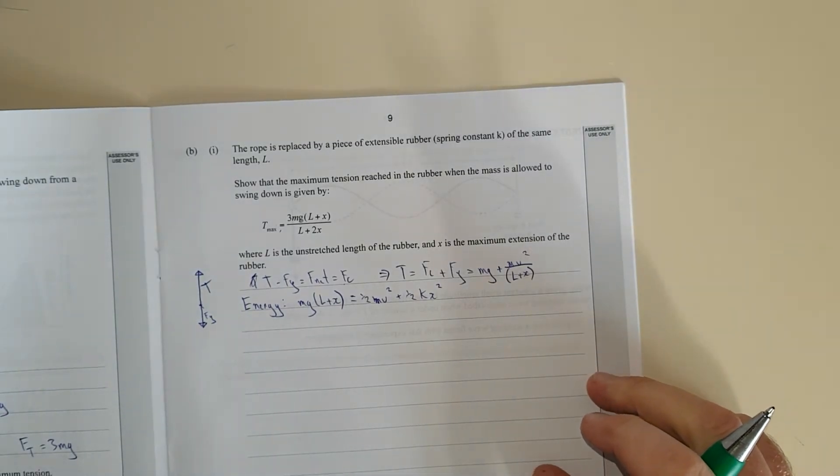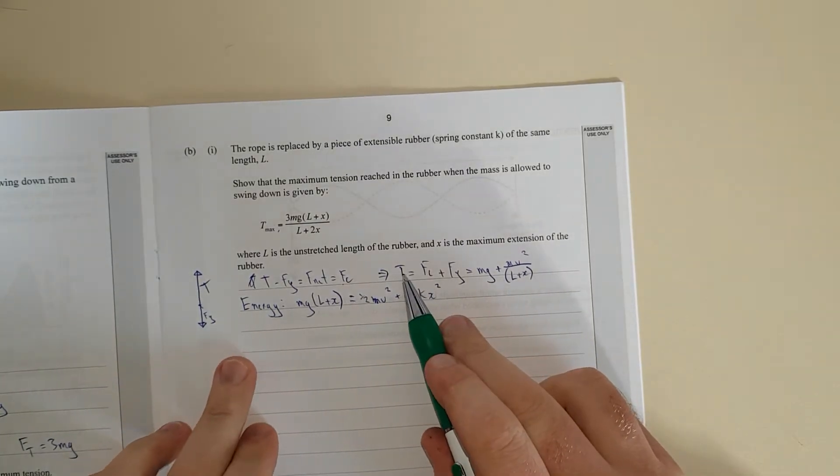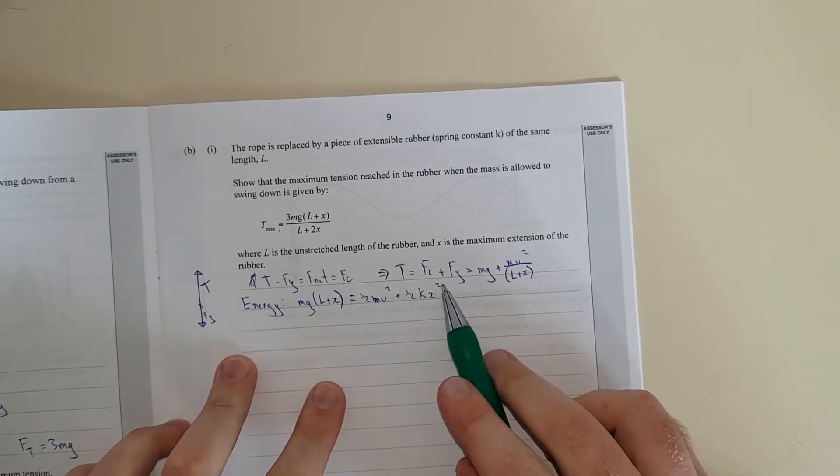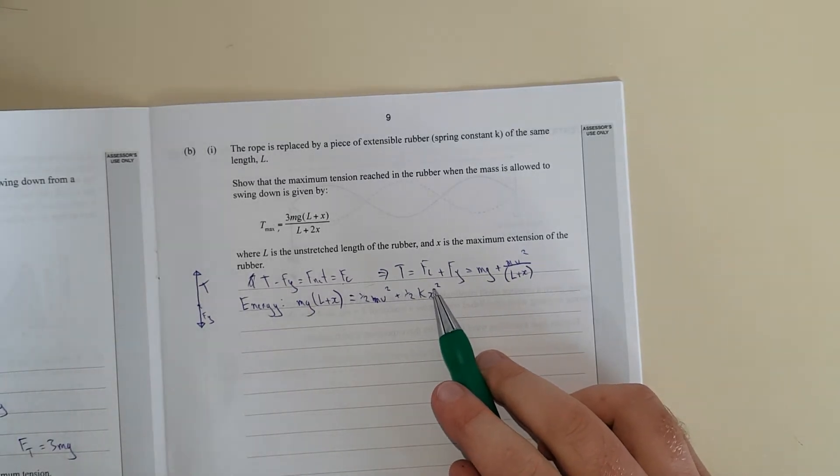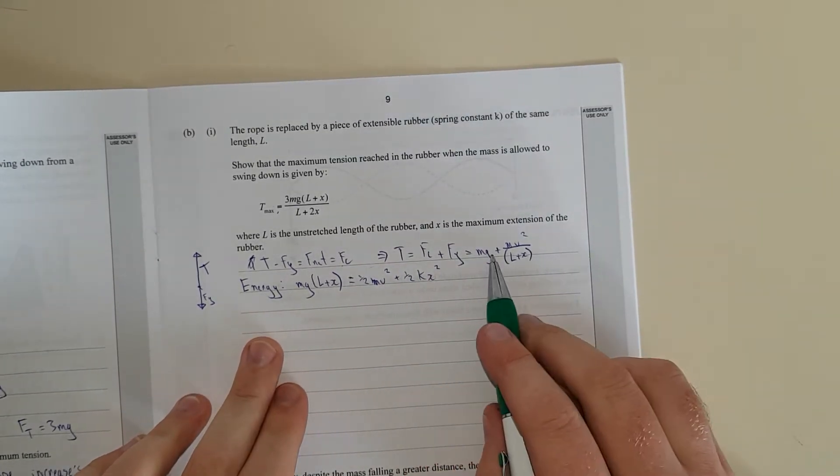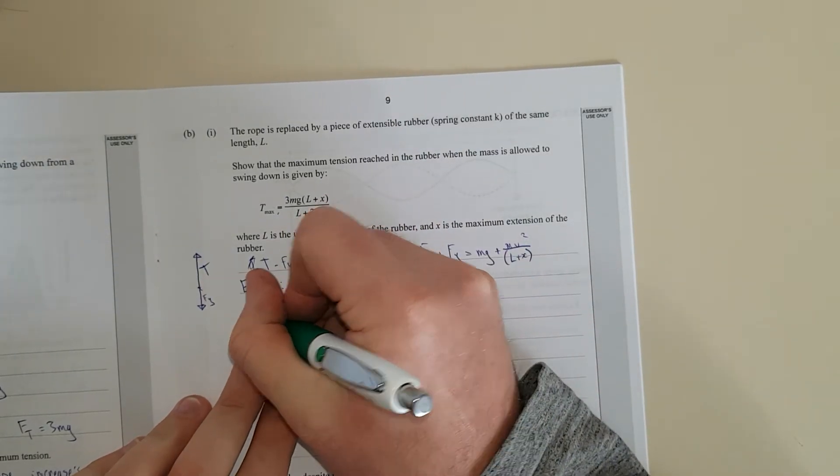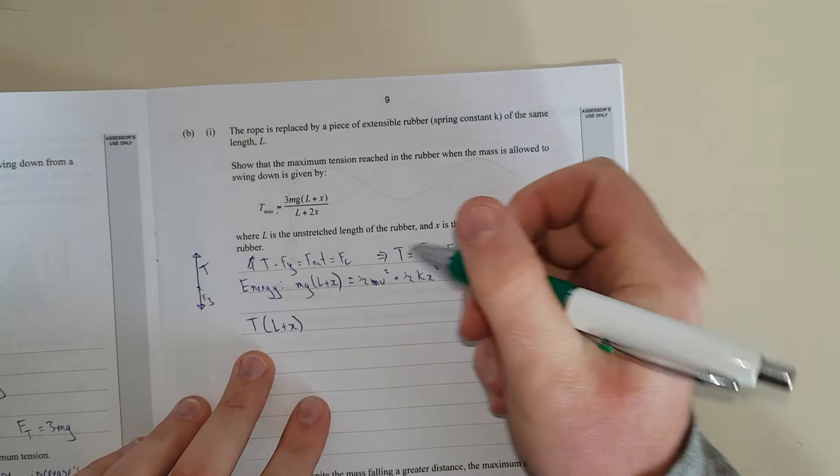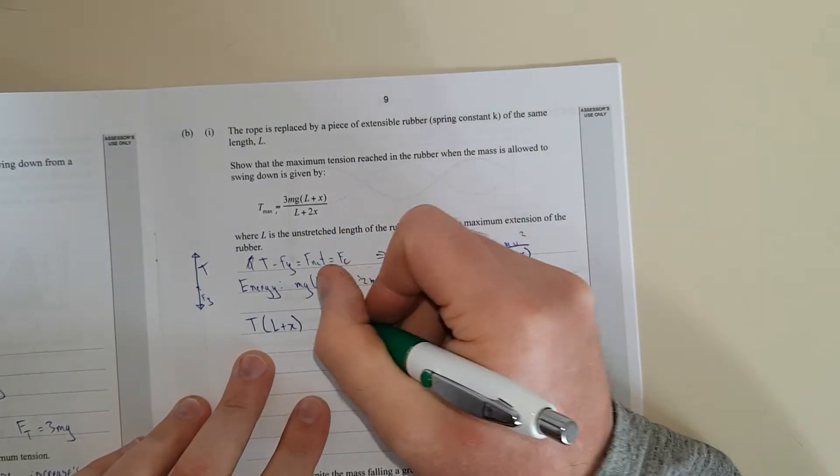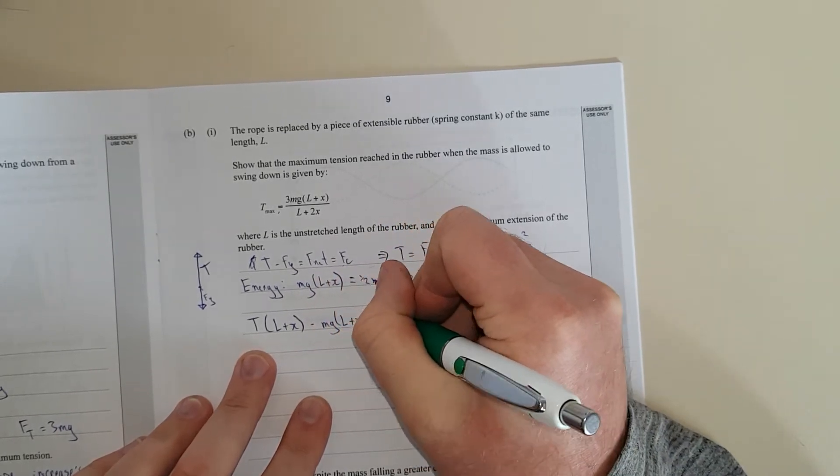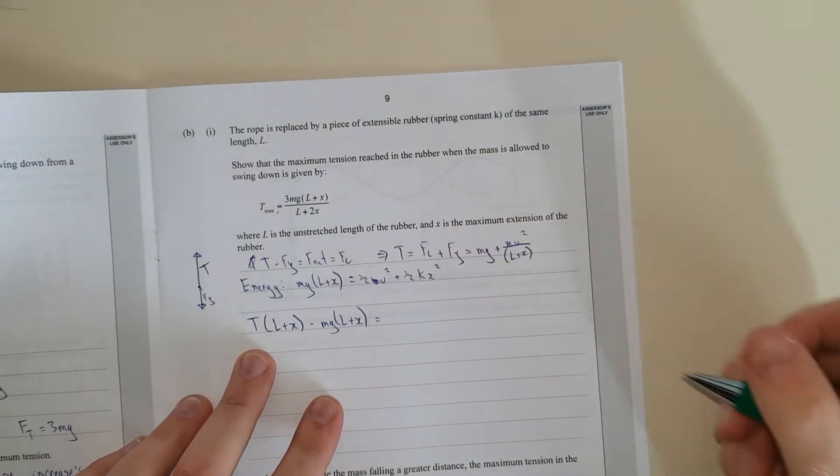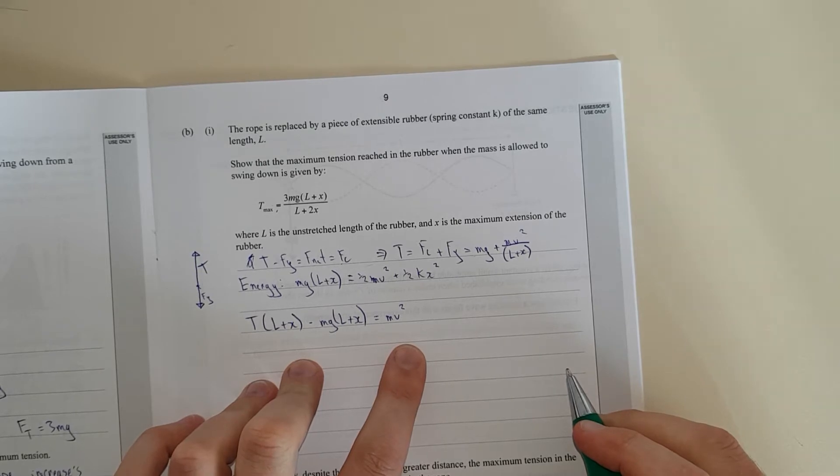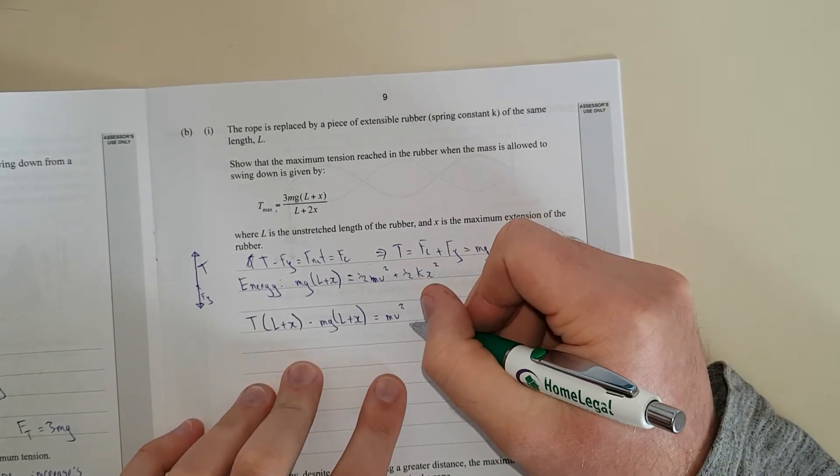Now what do I want to do? I want to rearrange this for mv squared. So I want to get rid of the velocity, the half mv squareds. I'm going to rearrange this here for mv squared. We're going to times both sides by L plus X, and then I'm going to move the Mg to the other side, so it'd be minus Mg L plus X, and that is going to be equal to mv squared.